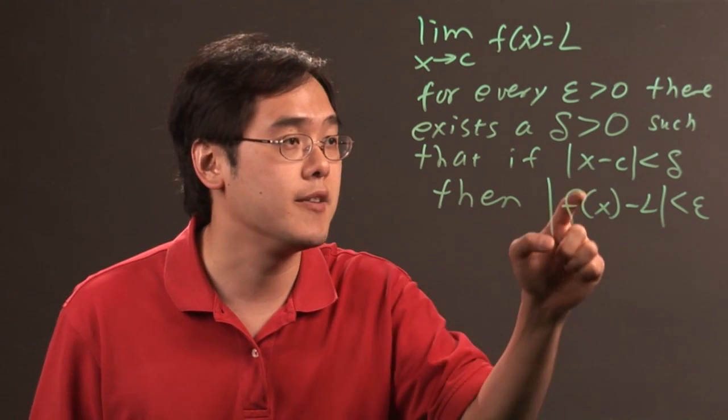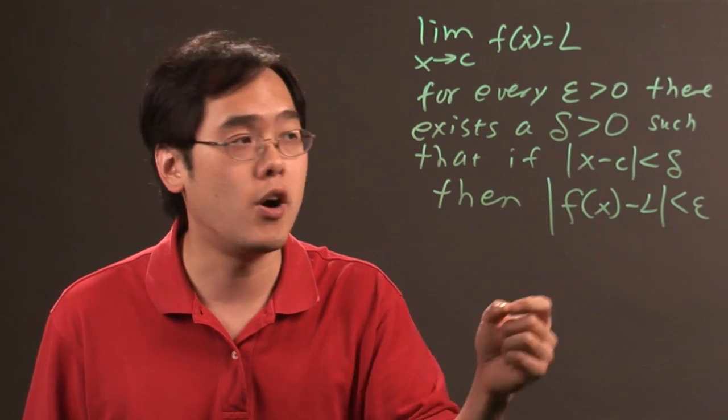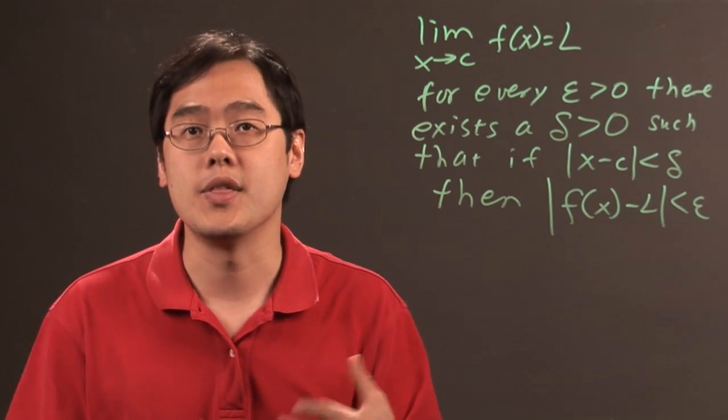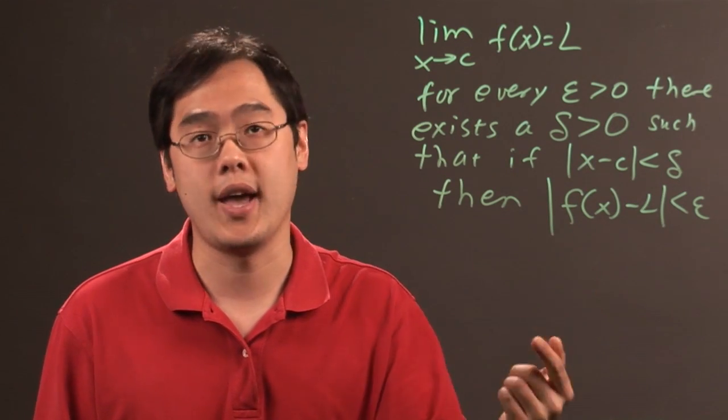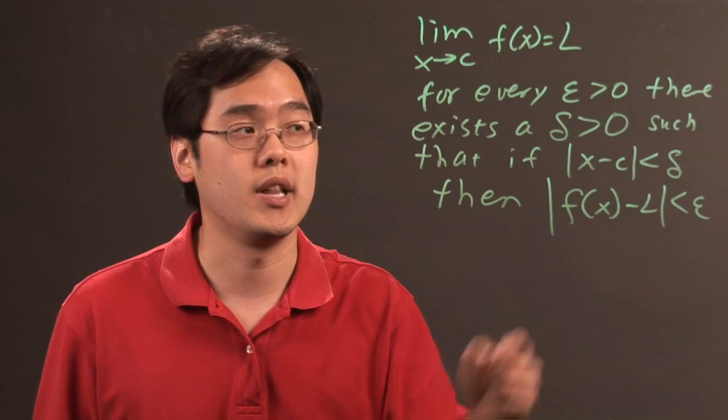So, that means the idea, once again, is that if the distance between x and the number that is approaching c is going to be small, less than delta, then the distance between the y coordinate, f(x), and L is also going to be very, very small, and that distance is going to be less than epsilon.